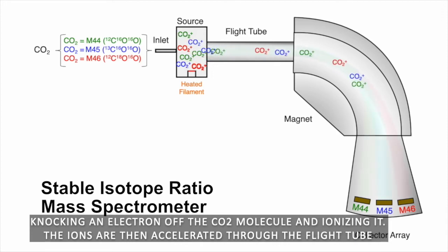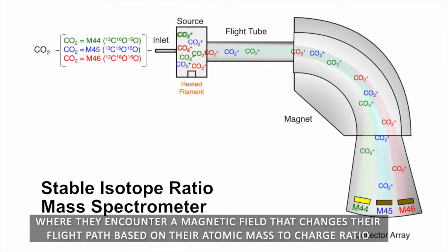The ions are then accelerated through the flight tube where they encounter a magnetic field that changes their flight path based on their atomic mass to charge ratio.